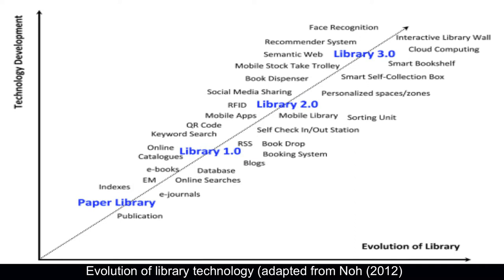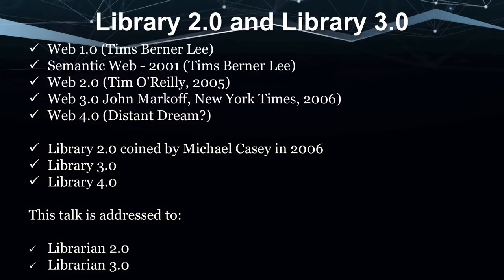This slide is adopted from a 2012 article. The Web was invented by Tim Berners-Lee, who also used the term 'semantic web' in 2001. Web 2.0 was the terminology used by Tim O'Reilly in 2005, and Web 3.0 was coined by John Markoff of the New York Times in 2006. Web 3.0 is still a distant dream — it has not been fully implemented as conceived. People also talk of Web 5.0, which is basically emotional or feeling-based interaction between humans and computers — still a distant dream.